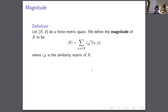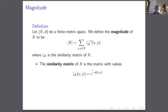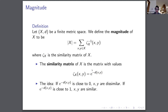What's the definition of magnitude? If we have X a finite metric space, then we define the magnitude of X to be this sum — the sum over the inverse of a similarity matrix, indexed by values x, y in X. The similarity matrix has values e to the minus distance of x and y. If e to the minus d(x,y) is close to zero, x and y are far apart; if it's close to one, x and y are quite similar — essentially the same point.